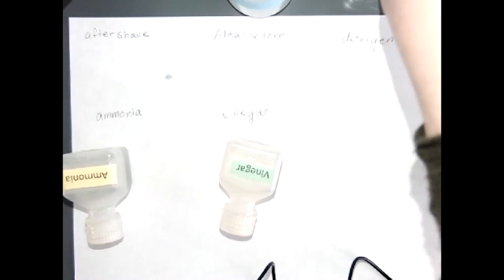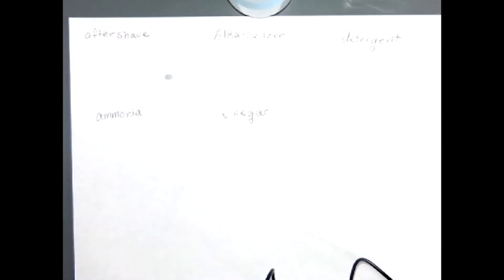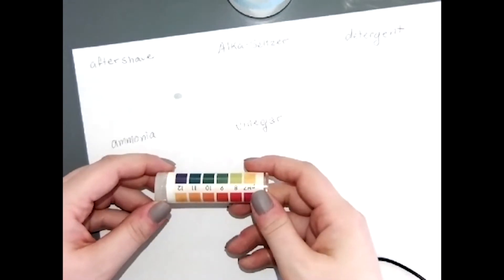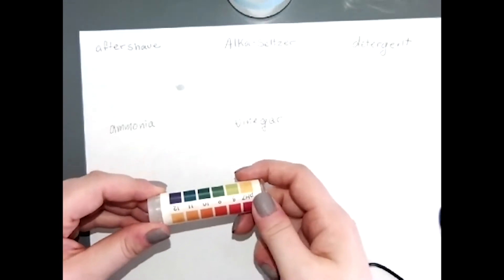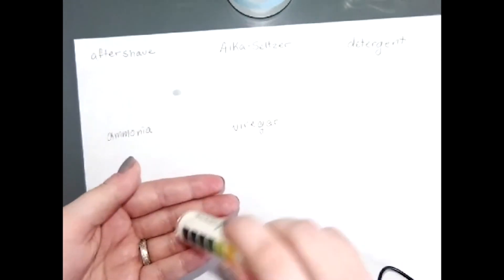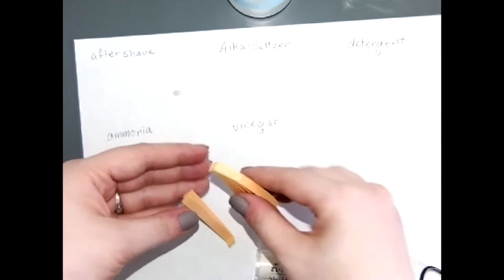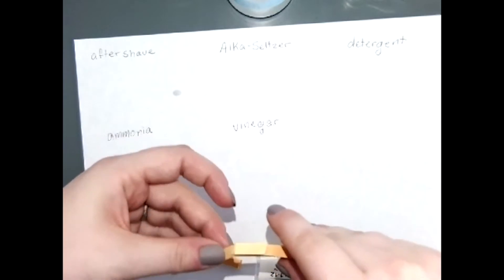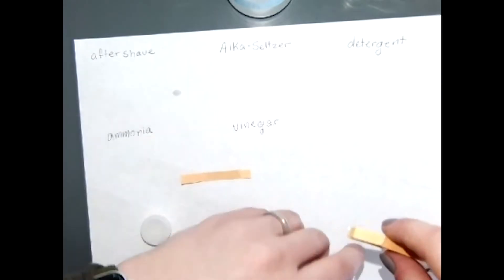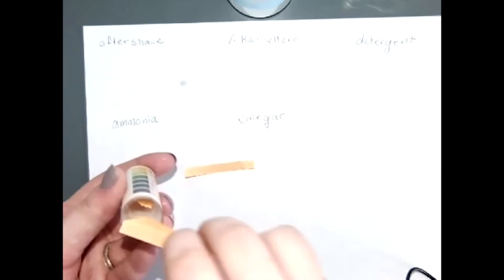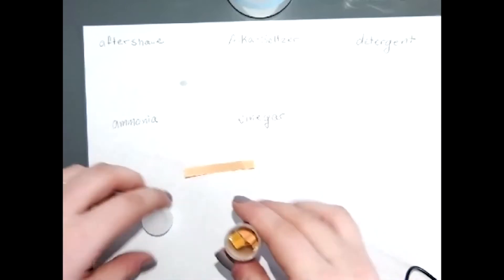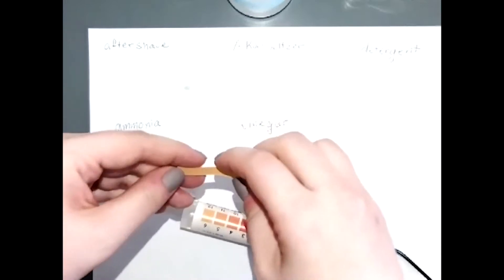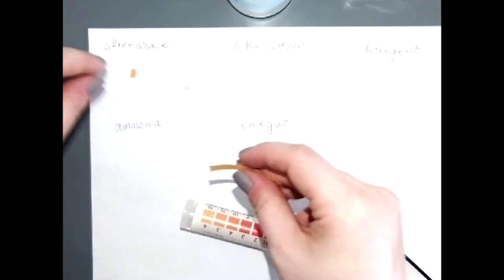We have aftershave, alka-seltzer, vinegar, ammonia, and detergent. What we're going to do is test the pH of each of these with pH paper. If you have never used this substance before in the lab, it arrives as little strips of this papery material.